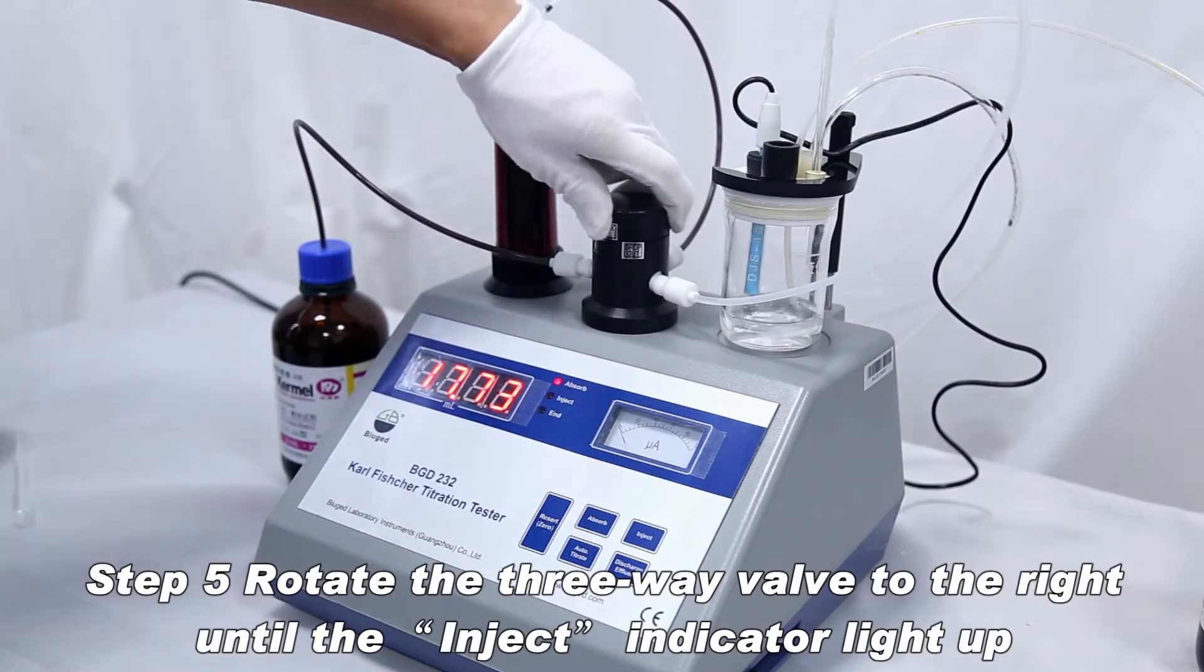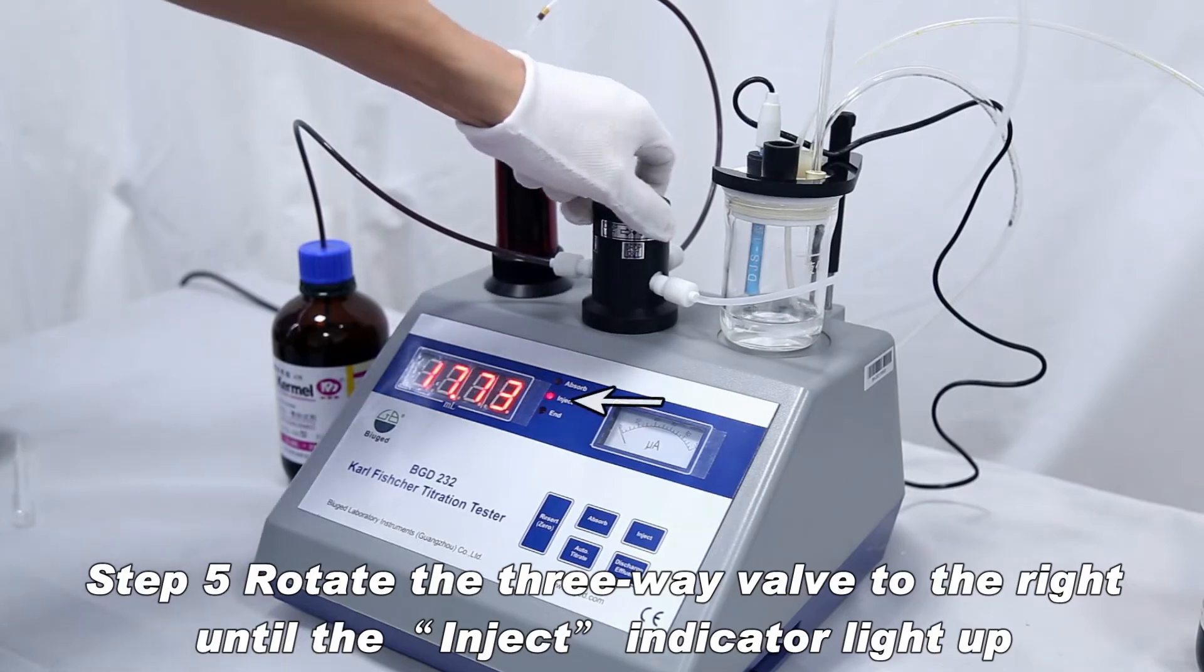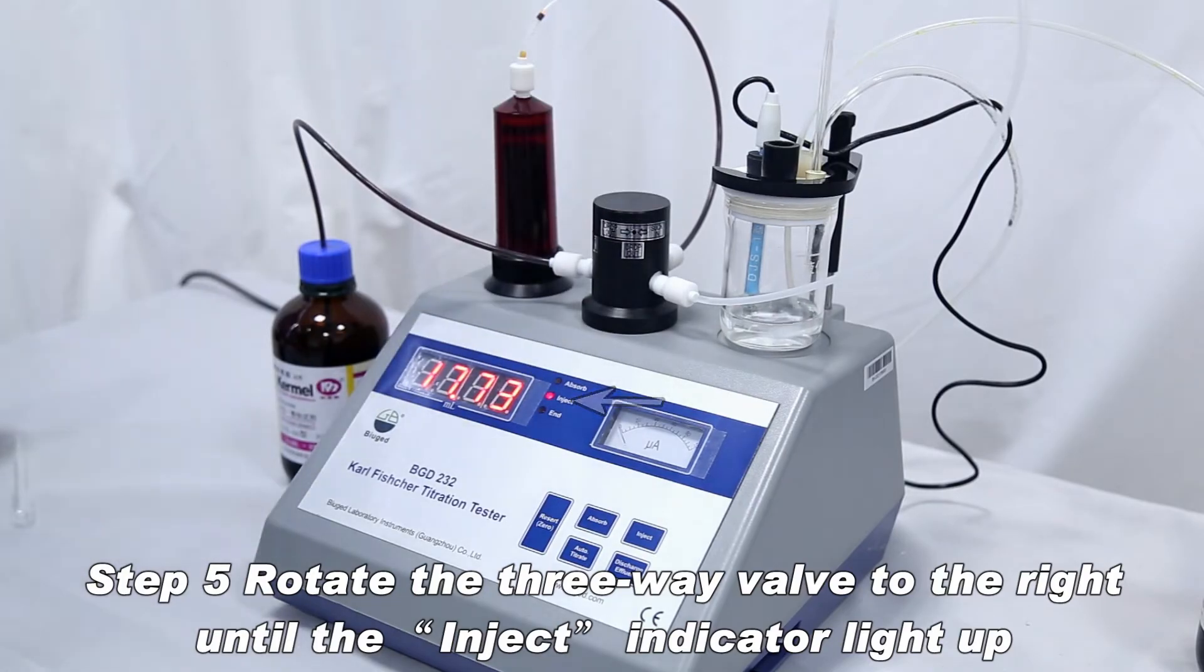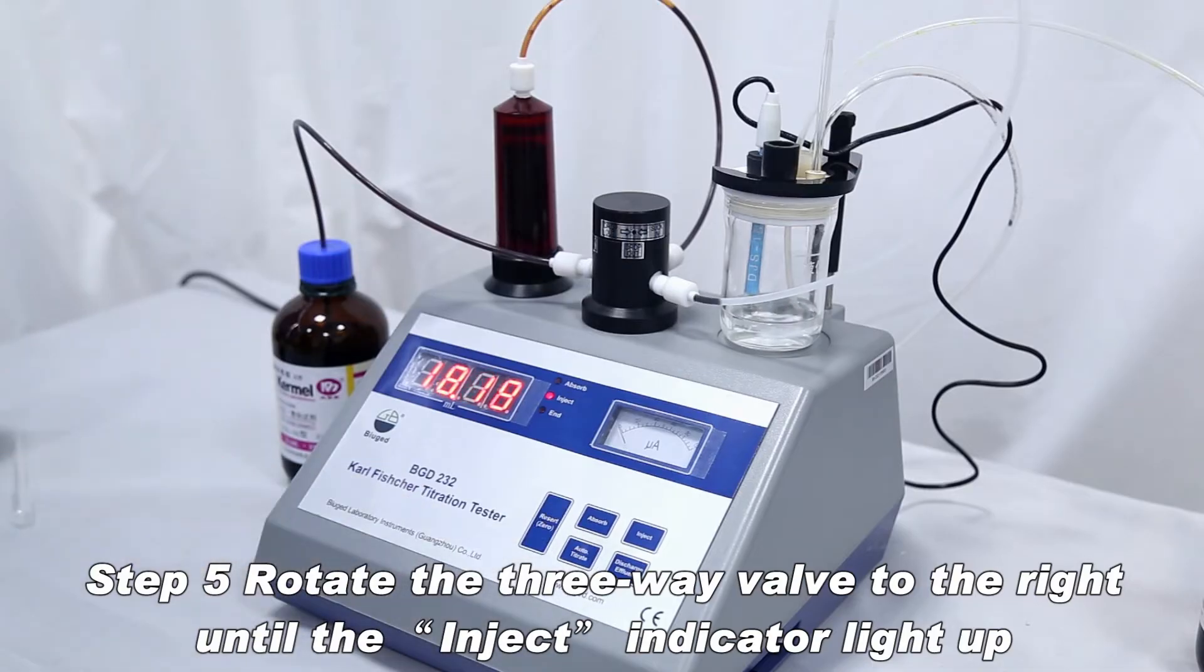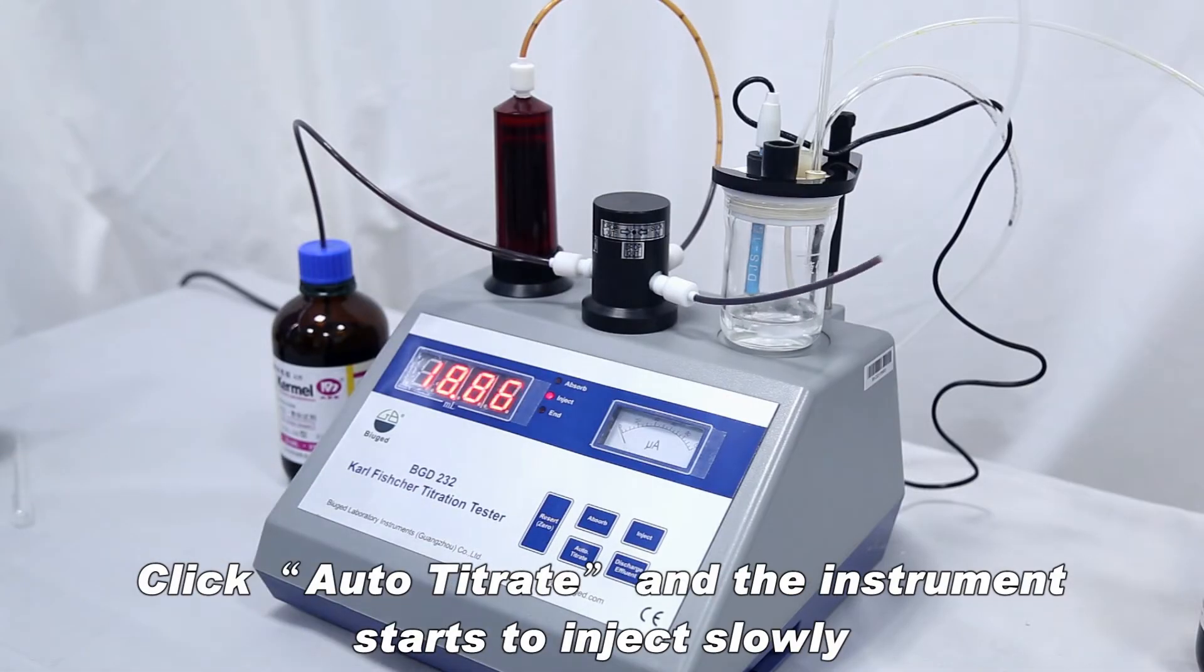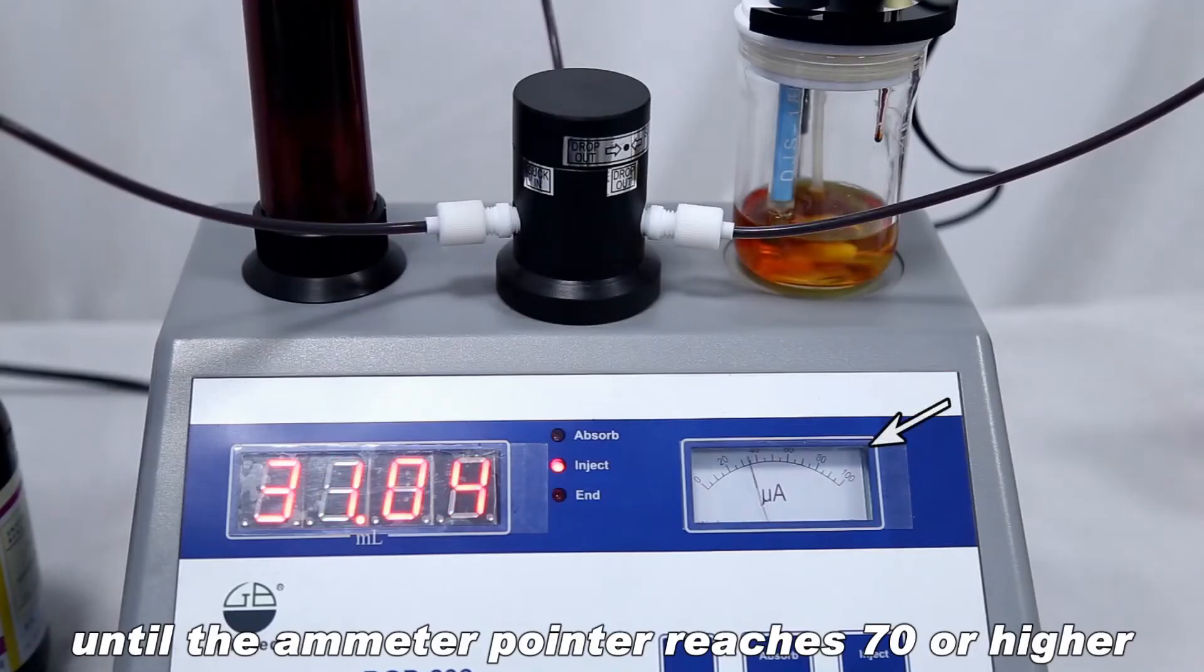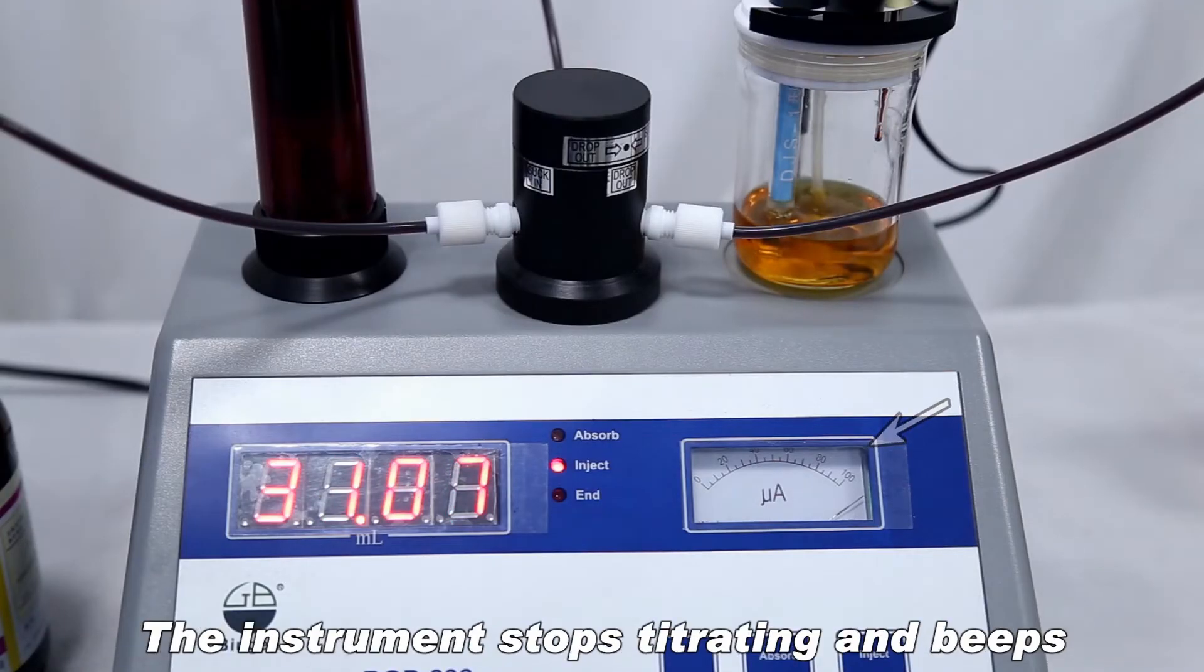Rotate the three-way valve to the right until the inject indicator lights up. Click auto-titrate and the instrument starts to inject slowly. Until the ammeter pointer reaches 70 or higher, the instrument stops titrating and beeps.